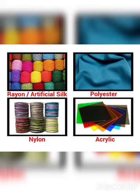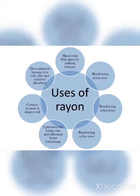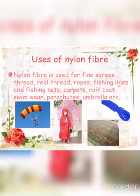What are the uses of synthetic fiber? First, rayon is used to make rope, clothes, caps, tire cord and carpets. Next, nylon is used to make fishing nets, ropes, parachutes, fabrics and bristles for brushes.